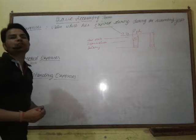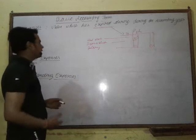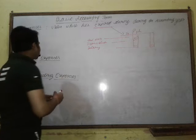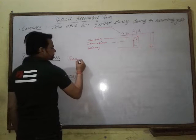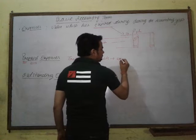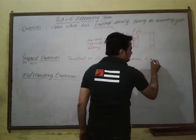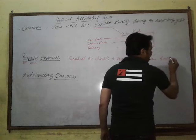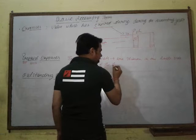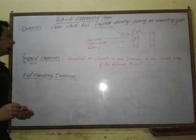These are payments made in advance. For example, insurance paid in advance, rent paid in advance, salary paid in advance, wages paid in advance — all of these are prepaid expenses and are treated as assets. They are shown on the asset side of the balance sheet.